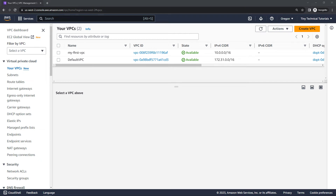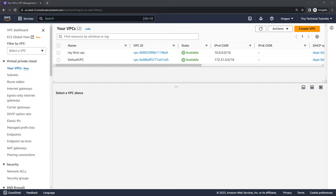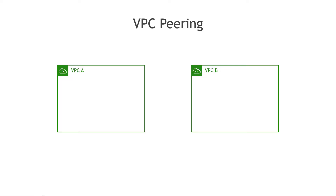Hi everyone and welcome to the channel. In this video I'm going to show you how to set up VPC peering between two VPCs. VPC peering is just what it sounds like — you've got two VPCs, let's say A and B, and you peer or connect them together to make them behave as a single network, so instances in A can talk to instances in B and vice versa. You might want to do this so that instances in different regions can communicate with each other, or even peer across AWS accounts.